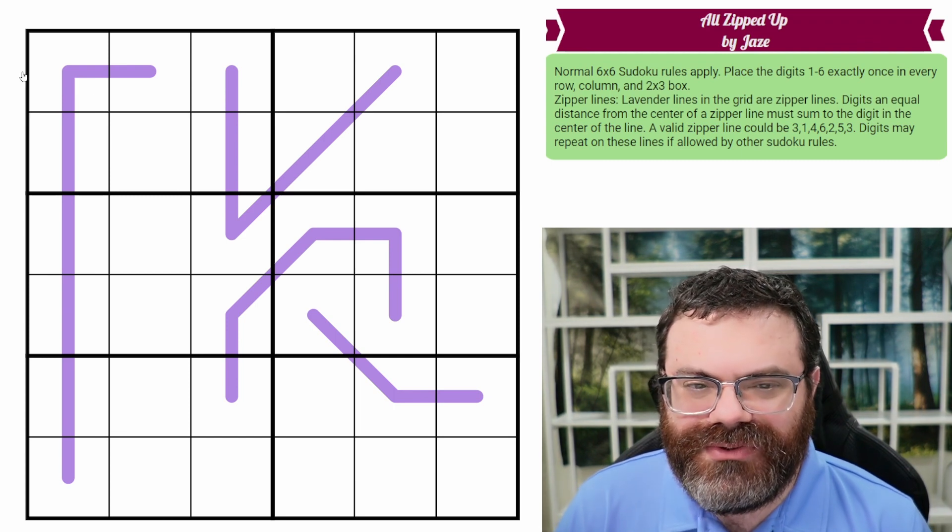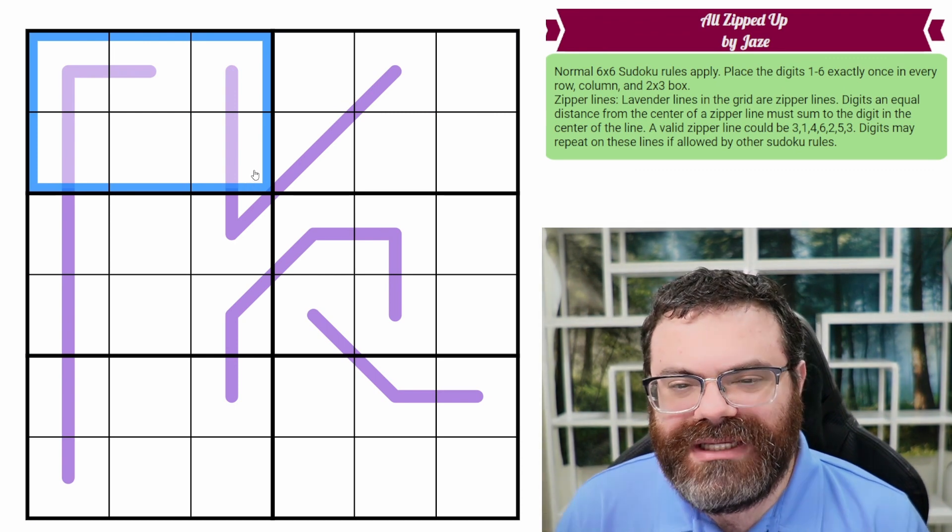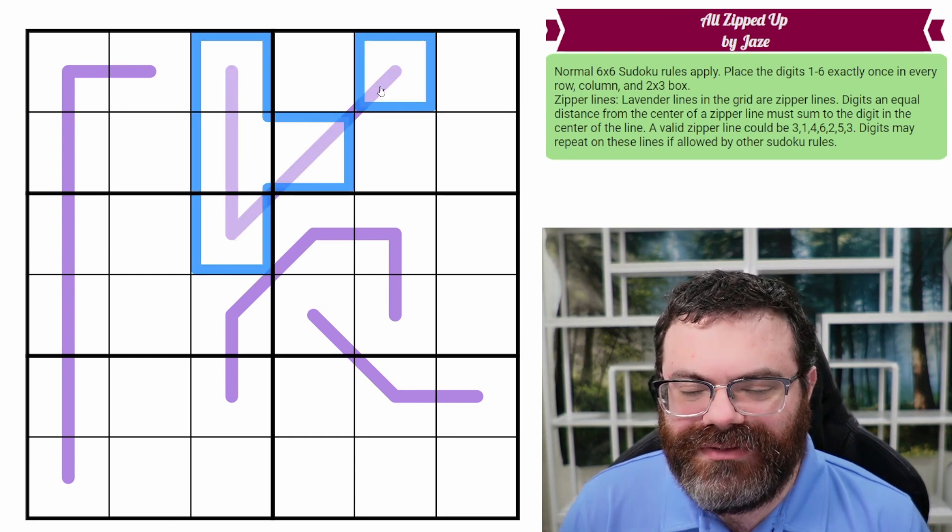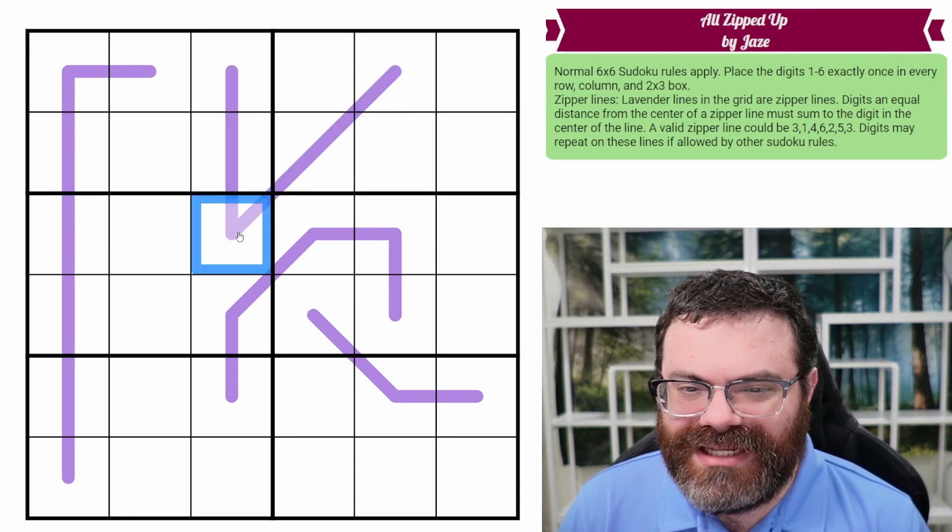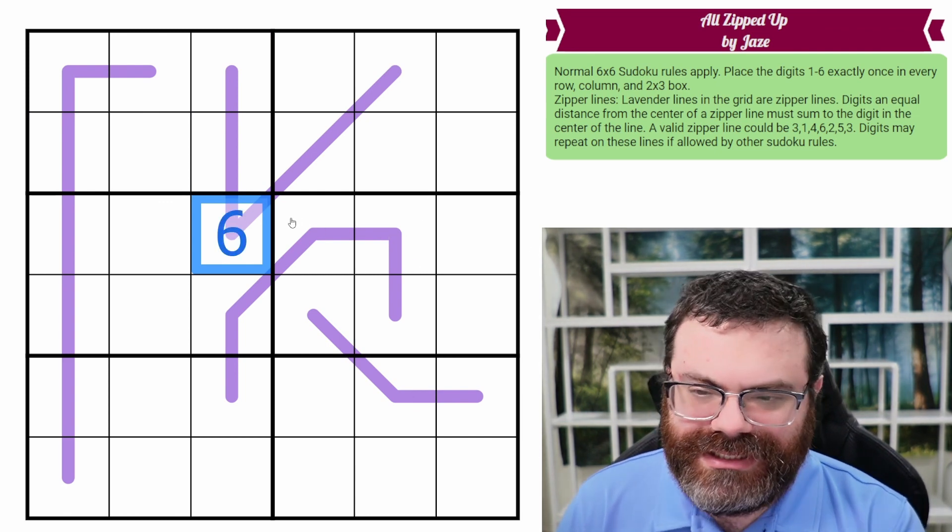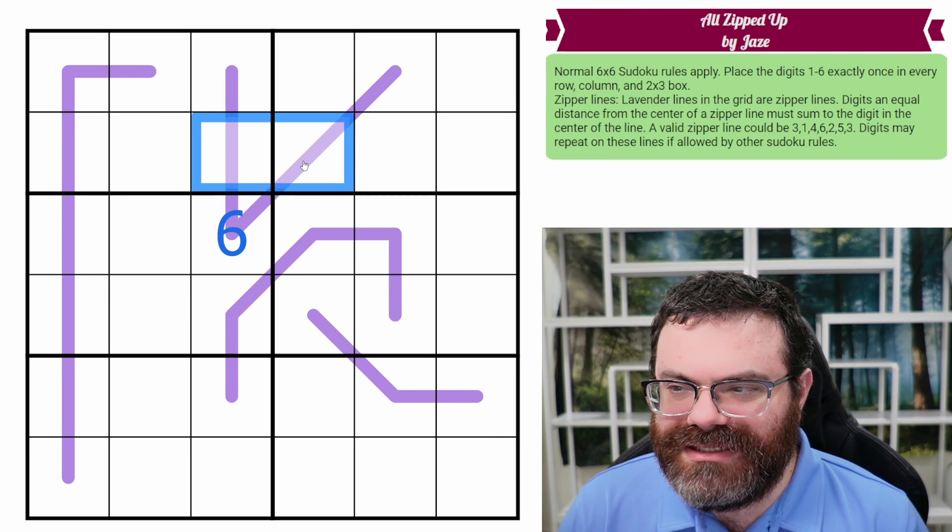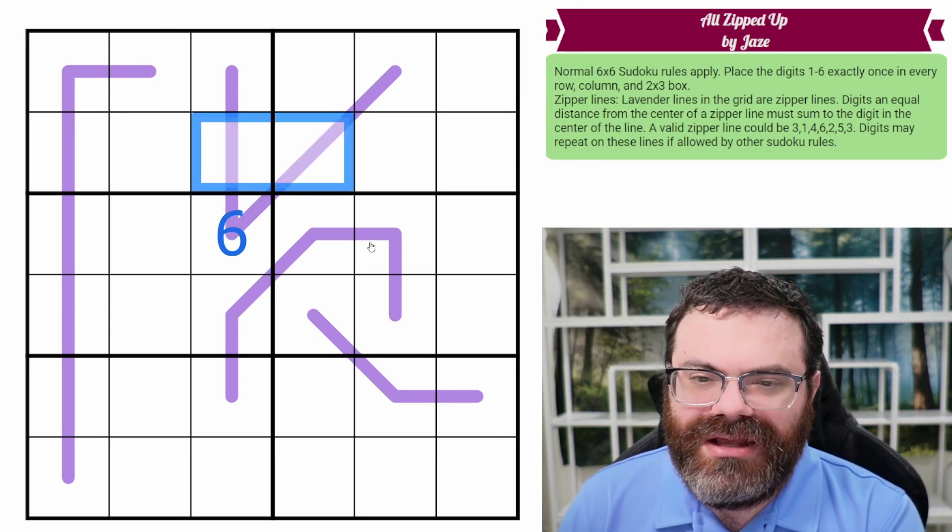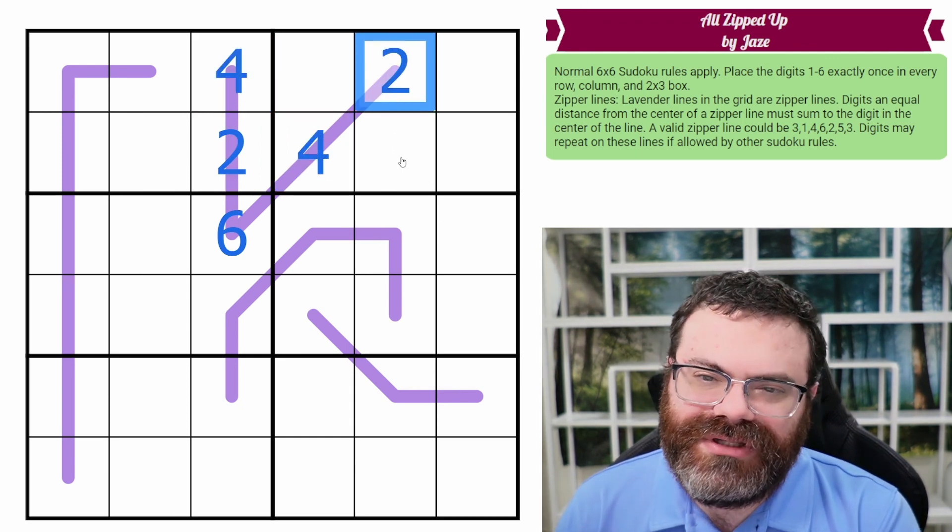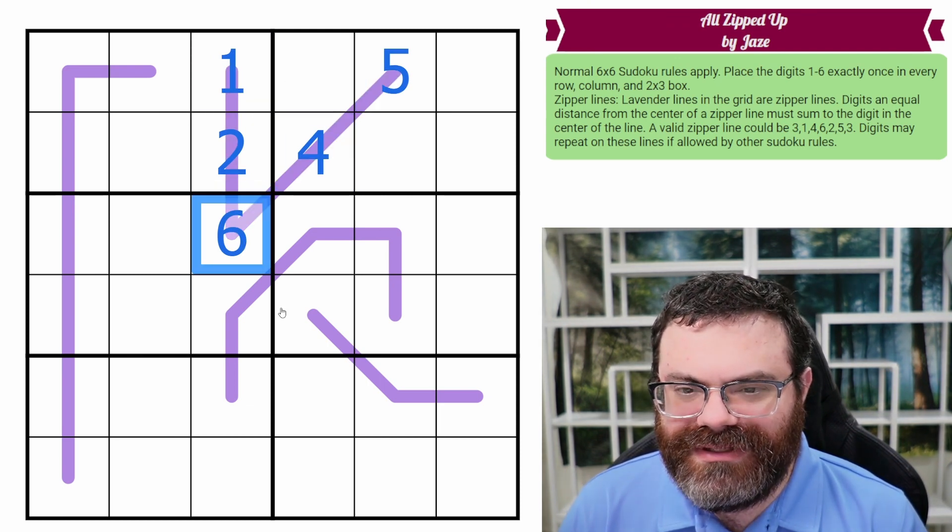We have normal six by six Sudoku rules. In every row, every column, and every two by three box, we are placing the digits one to six exactly once each. Additionally, we have these lavender lines in the grid. The way these lines work is you find the center, and then whatever digit goes in there, say a six, the digits that are equidistant from that center must also add to that center digit. So we could do two, four here, and four, two here, or one, five here. However you do it, these add to six, these add to six, and then you have the six in the middle.